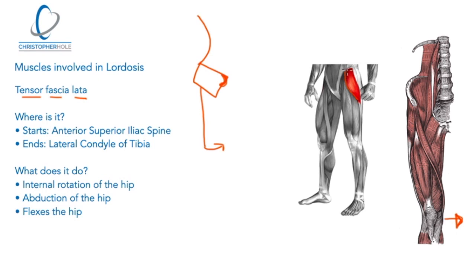The TFL starts at the top of the hip and ends on the lateral condyle of the tibia. The tibia is the bone of the lower leg — so how does a muscle up at the hip attach all the way down there? It goes through the IT band, joining in with the gluteus maximus from the back. What this muscle does is internally rotate the hip, rolling the knee inward — so if your knees point inwards, it will be in part due to this muscle.